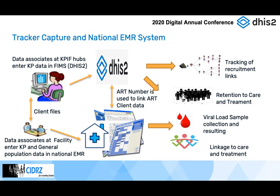Once we reach out to clients and have their data in DHIS2, this data is also entered in the EMR, and using identification information such as ART numbers, we're able to link the client data between the DHIS2 tracker application and the EMR. We're able to track these clients — we can get the viral load, track clients who are due for viral load, track clients who are supposed to be linked to care and treatment, as well as tracking the recruitment links between the initial recruiters and their recruits.